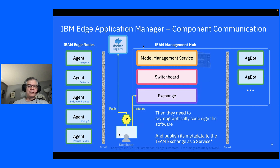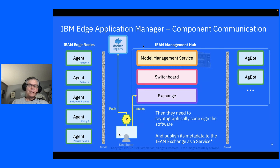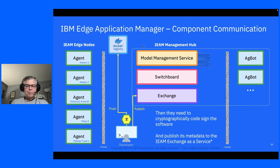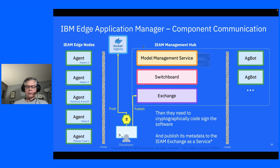This tells the Exchange that this container in this registry, optionally using these credentials, with this cryptographic signature, has these deployment characteristics: it's able to bind to these ports, mount these volumes, etc. You publish all that to the Exchange to make it available so you can configure policies and patterns that use it.